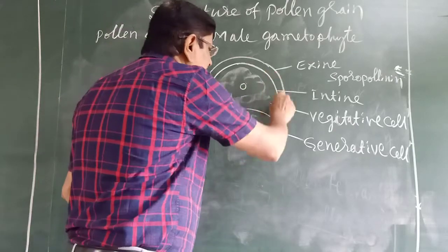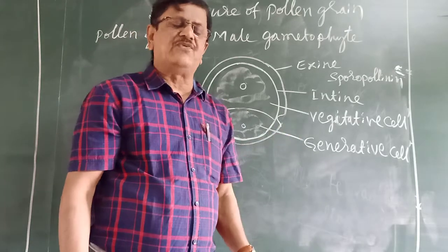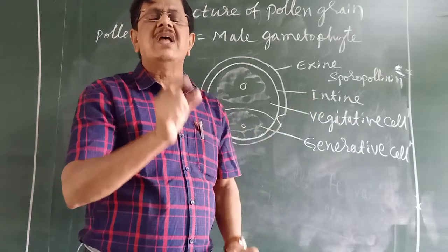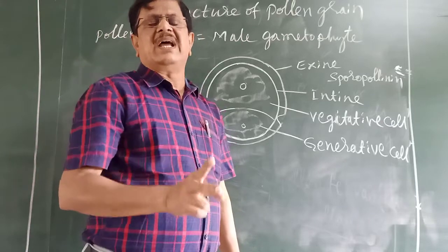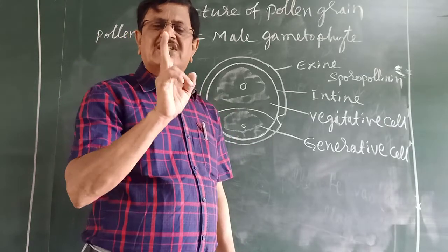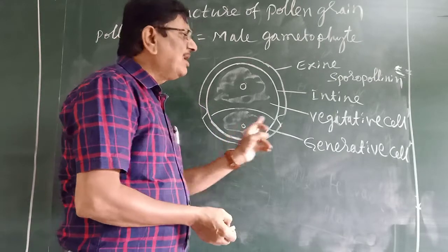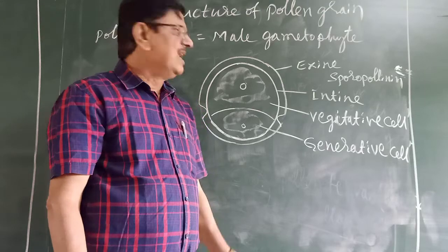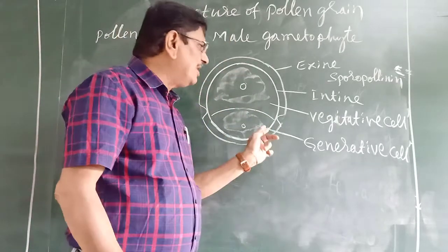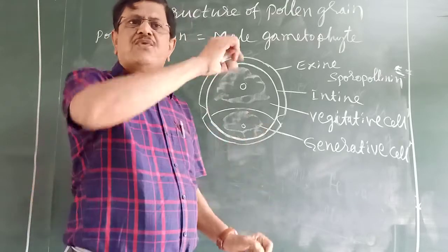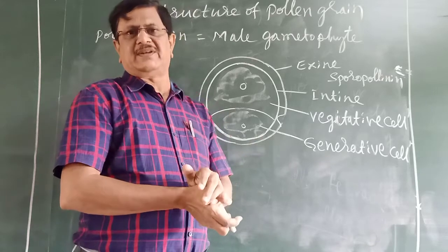The second layer is intine. Intine is made up of pectin and cellulose. Each pollen grain consists of two cells. One is a larger vegetative cell. Another is a smaller generative cell. These two are not separated. Actually, within the complete vegetative cell, the small generative cell is floating. This generative cell produces the male gametes.